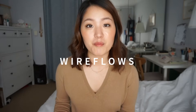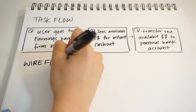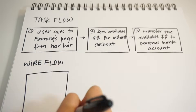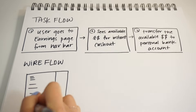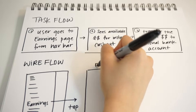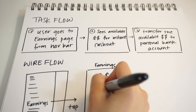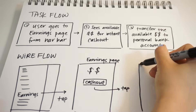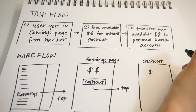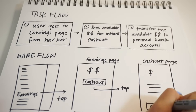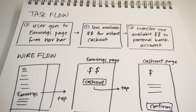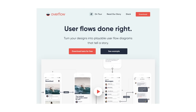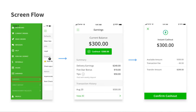Moving on to wireframe flows, or wire flows — I quickly sketch out some very low-fidelity sketches with my pen and notebook to visualize the flow and brain-dump any missing steps or things to consider, such as edge cases. Once I've defined the screens that are part of the user flow, I use tools like Overflow to create a high-fidelity screen flow and annotate any description of what happens at each step or screen.